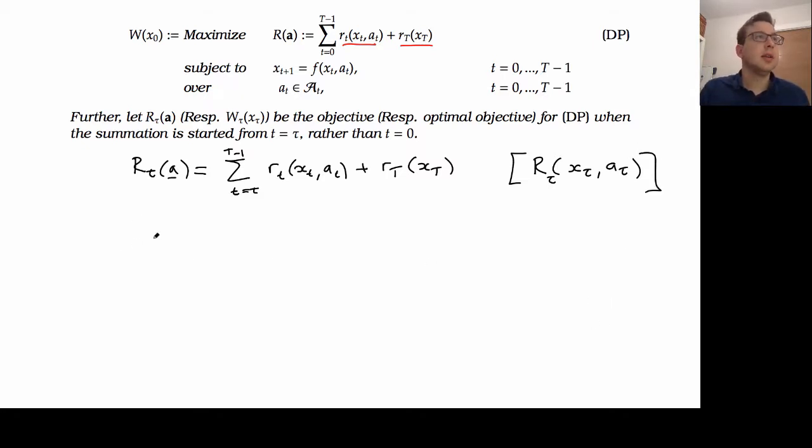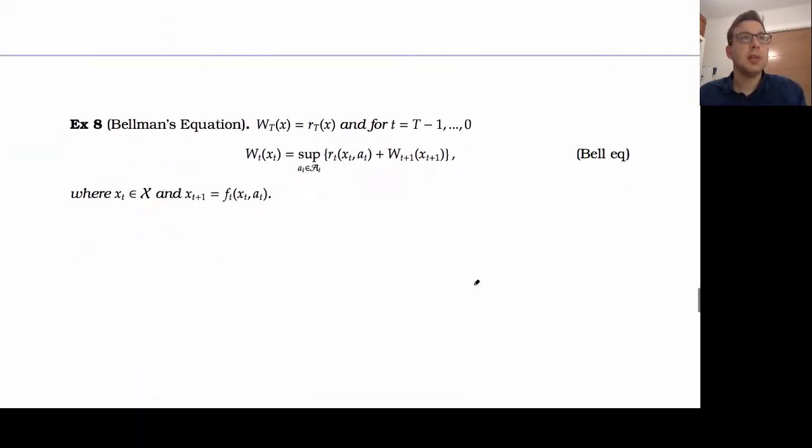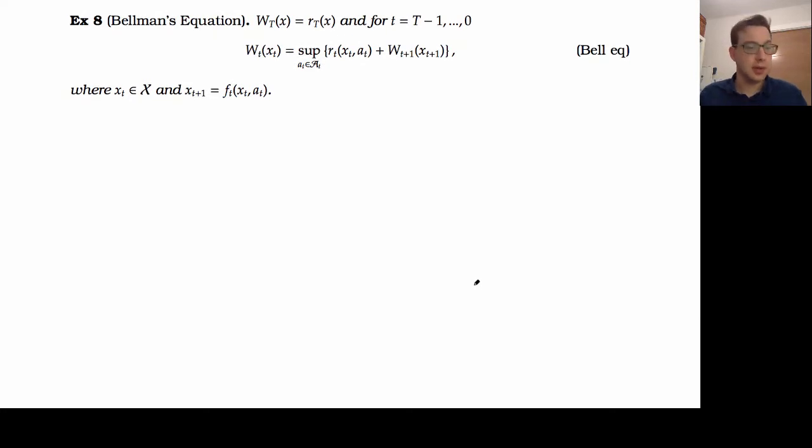And again, we're going to let w of tau of a be the maximum minimum over the sets of actions up until time t. So that a of tau in the sets of actions that I can take from time tau onwards, and we maximize our reward of that. So now we're going to prove one of the most important equations in the idea of dynamic programming. It extends out to all the different sorts of generalizations in ever so slightly different ways, but the same basic proof idea remains the same.